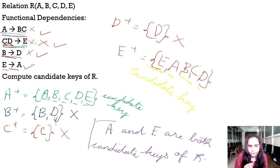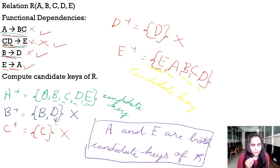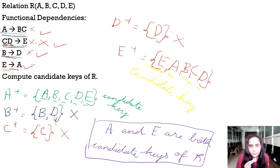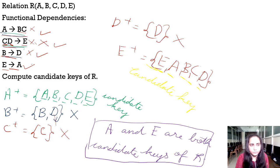As a conclusion for this entire calculation, A and E are both candidate keys of R. You don't need to calculate further because the candidate key consists of only one attribute in this case. That's it for this video — thank you for watching and see you in the next video.